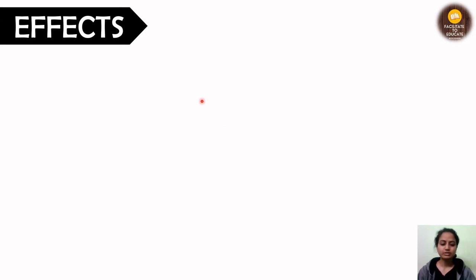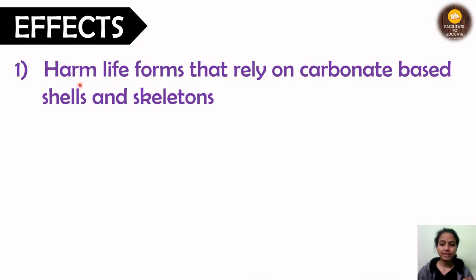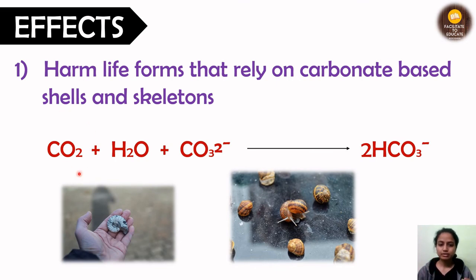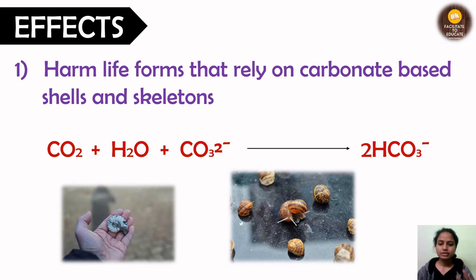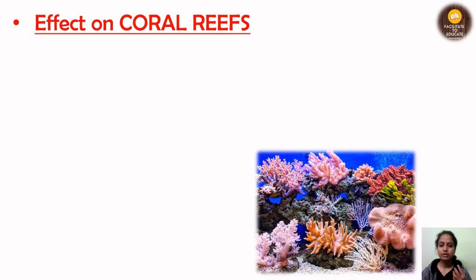The first effect of ocean acidification is that it harms life forms that rely on carbonate-based shells and skeletons. Many ocean organisms have shells and skeletons made of calcium carbonate. The reaction — CO2 absorbed by ocean water + water + carbonate from shells → two molecules of bicarbonate — causes the carbonate to dissolve day by day. The organisms eventually die, reducing the number of shell-based or skeleton-bearing organisms and affecting the food chain.